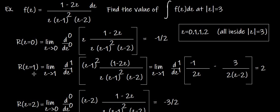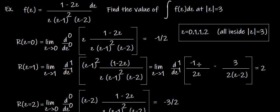Residue at z=1 (pole of order 2): limit z→1, differentiate once (n=2, so n−1=1). Cancel (z−1)² from numerator and denominator, leaving (1−2z)/[z(z−2)]. Using partial fractions and differentiating, then applying the limit z→1 gives a residue of 2.